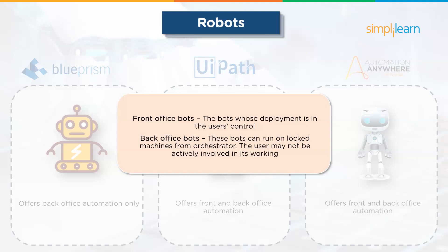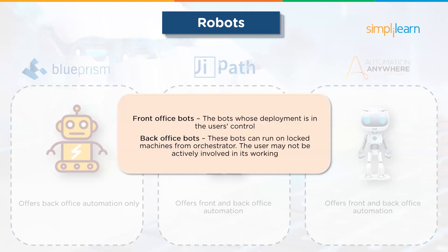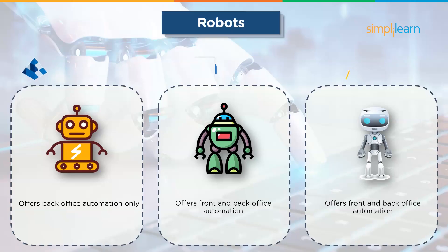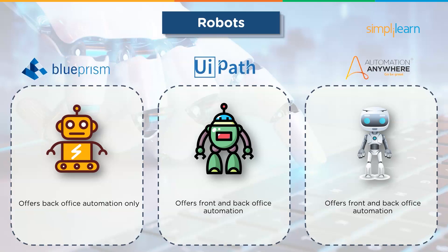The next comparison factor is robots. There are different types of bots: front office bots, whose deployment is in the user's control and are triggered and monitored by the user; and back office bots, which can run on locked machines from the orchestrator and may not require the user's involvement. Blue Prism deploys back office bots only. UiPath offers both front and back office bots. Same goes with Automation Anywhere, which deploys both front and back office bots.